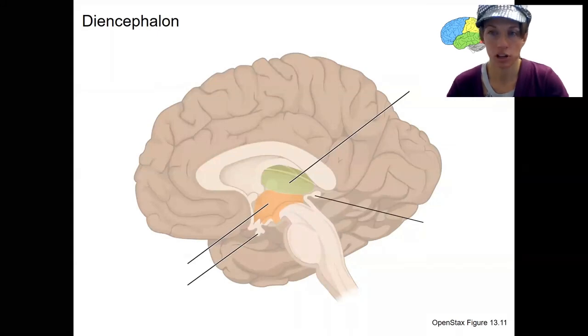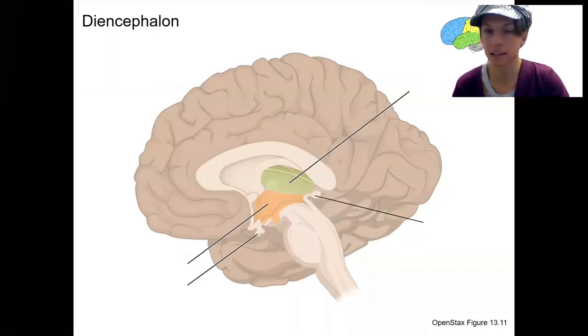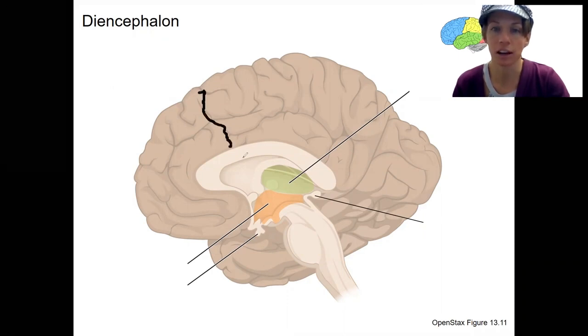The second main brain region I want to talk about is the diencephalon. So we've got the cerebrum out here with all these grooves and fissures, the gyri and sulci.